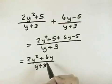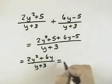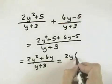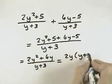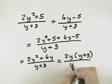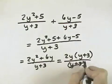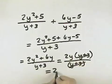But we do want to see if we can cancel any like factors out. We can take the greatest common factor out of the numerator of 2y. When we divide that out, we're left with y plus 3. And that will cancel with the factor of y plus 3 in our denominator, so that our final result is 2y.